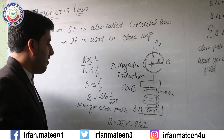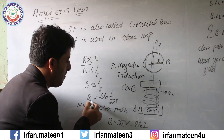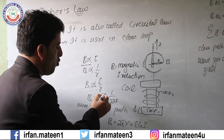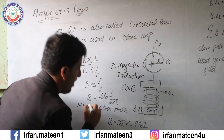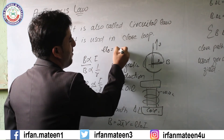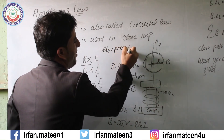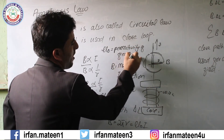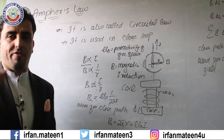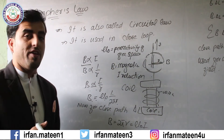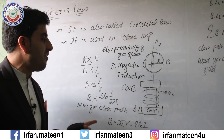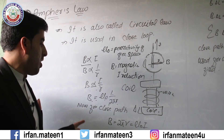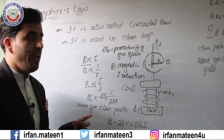Proportionality is removed by some constant and some variable. B is equal to mu naught times 1 over 2πr, where mu naught is the permeability of free space. Permeability of free space is used for discharging purposes because in a coil, discharging is very important for this kind of mechanism.